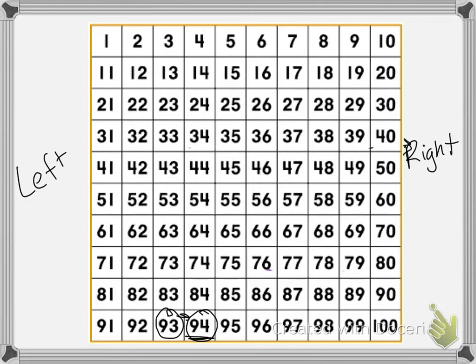What about one less than 21? If I go one less than 21, I have to move to the left. But since there's no number here, I'm going to have to go to the next row. So one less than 21 is 20.